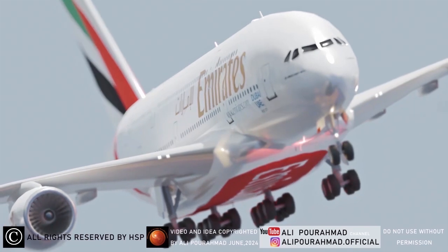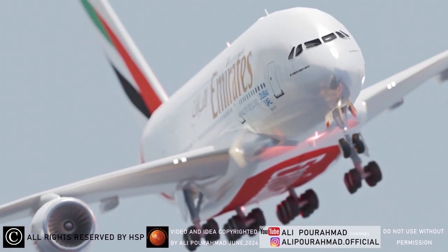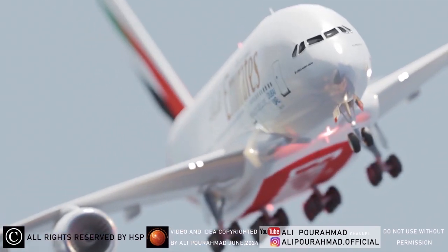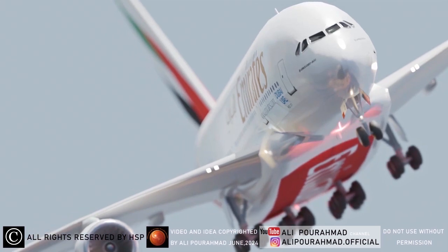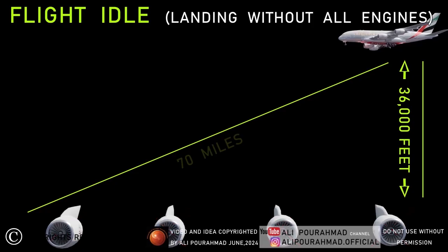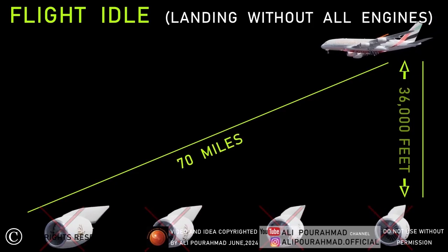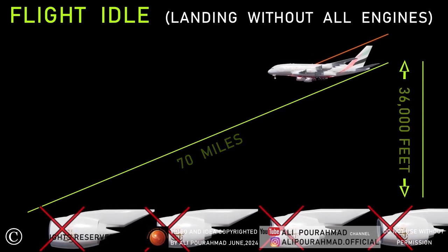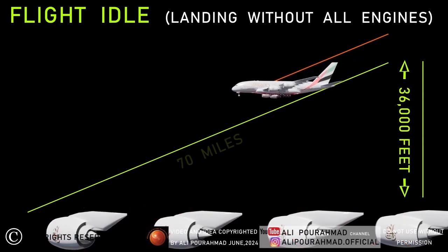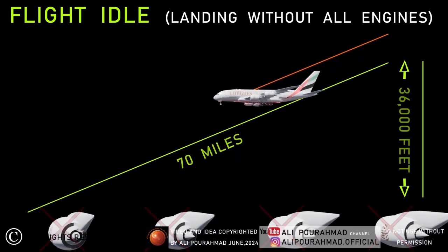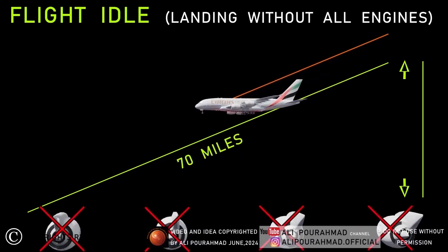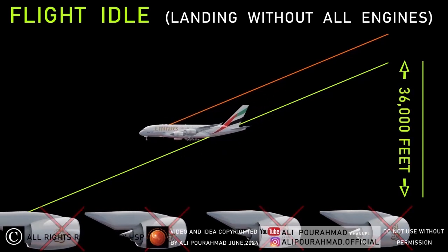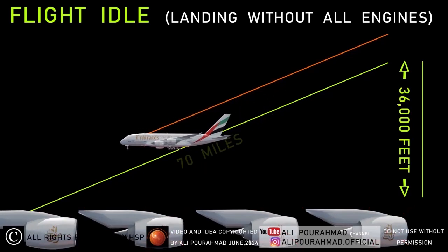For example, if an airplane has a ratio of 10 to 1 to continue flying without an engine, it means that during every 10 miles of flight the altitude decreases by 1 mile. A plane flying at a normal altitude of 36,000 feet can fly for 70 miles before it hits the ground if all engines fail.